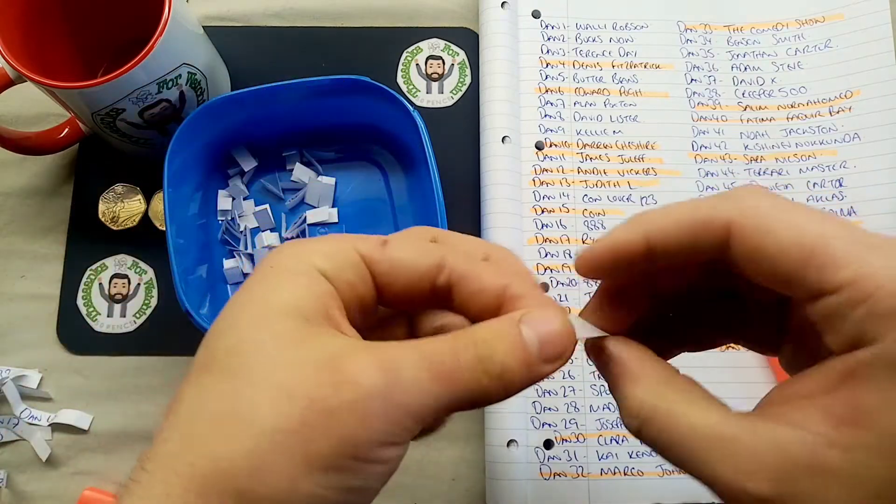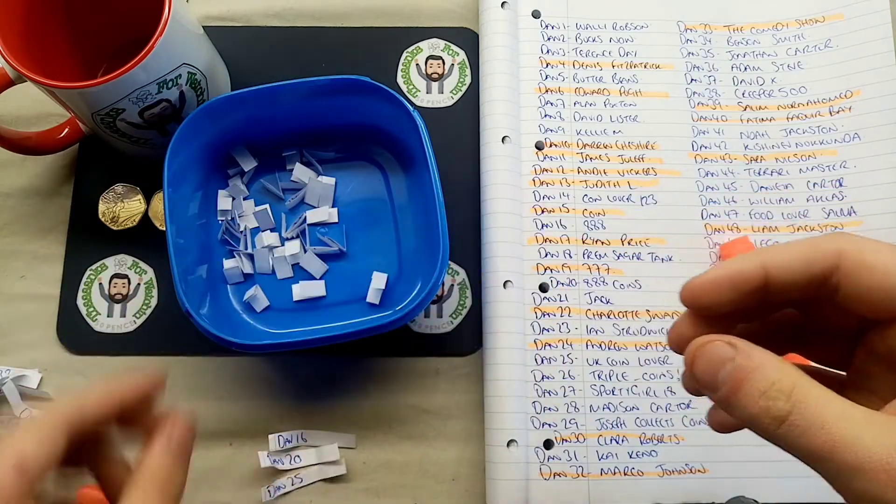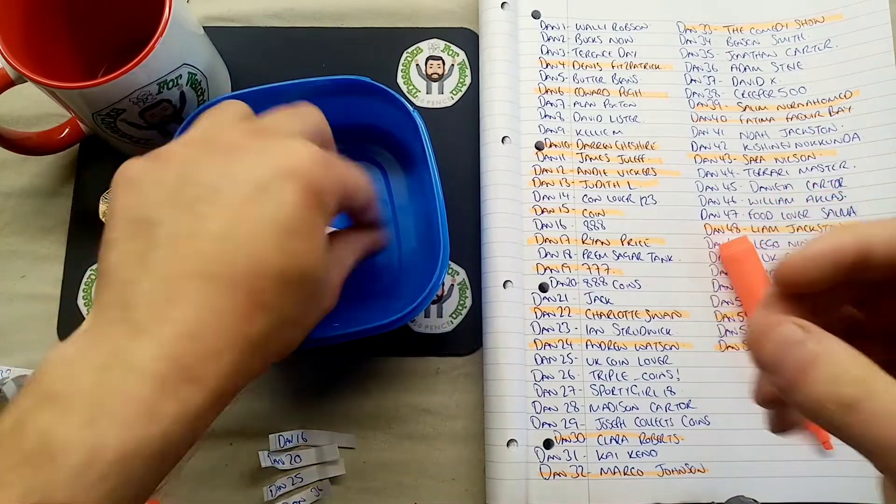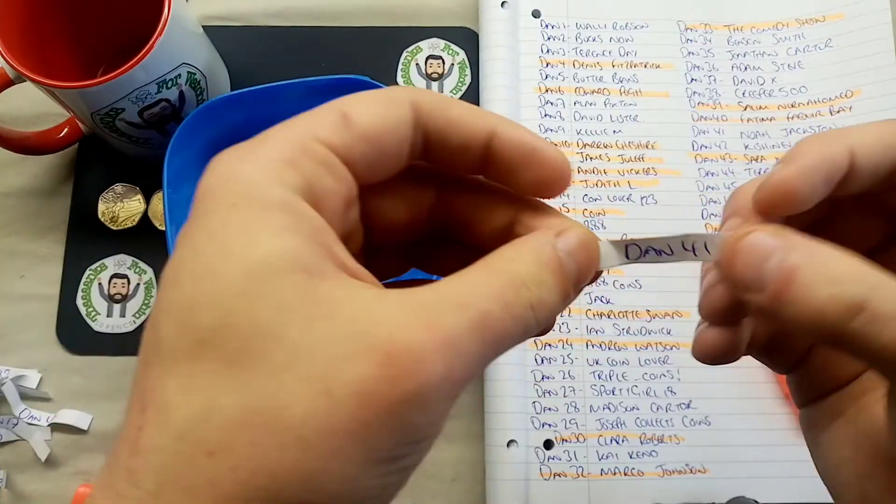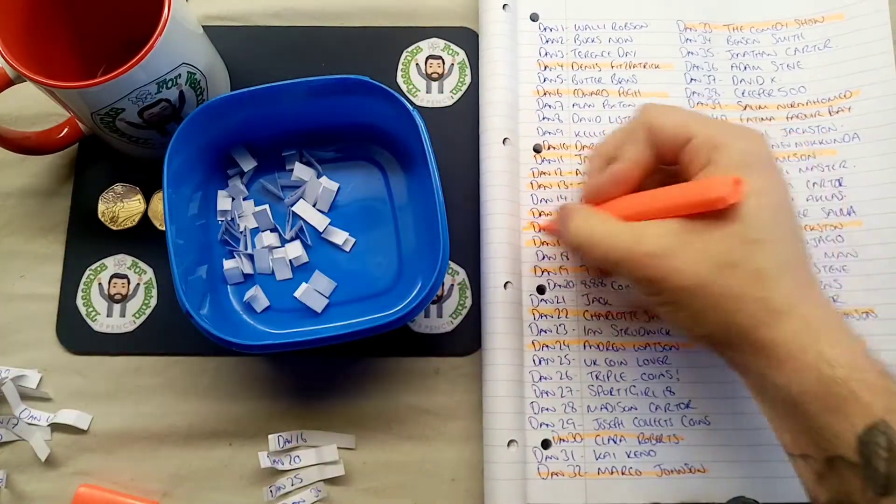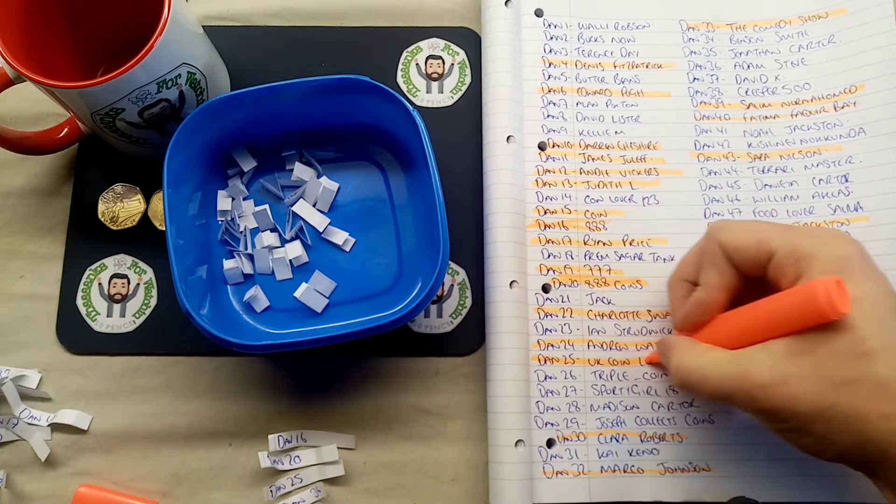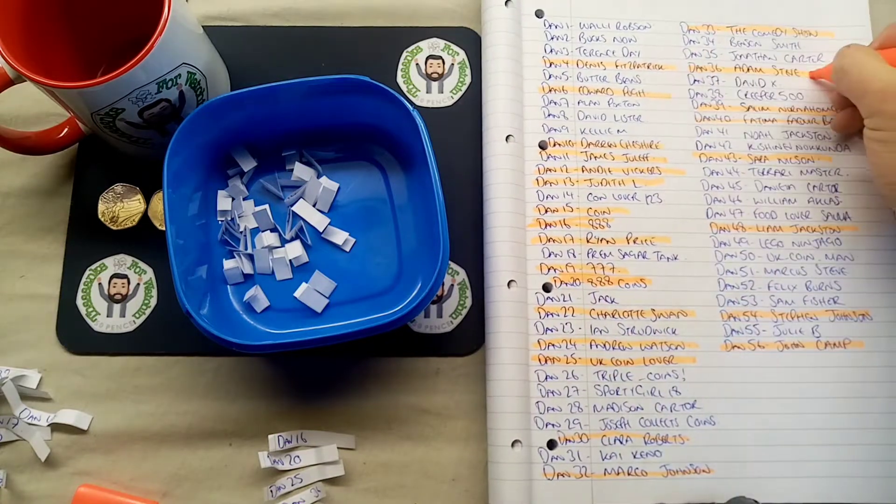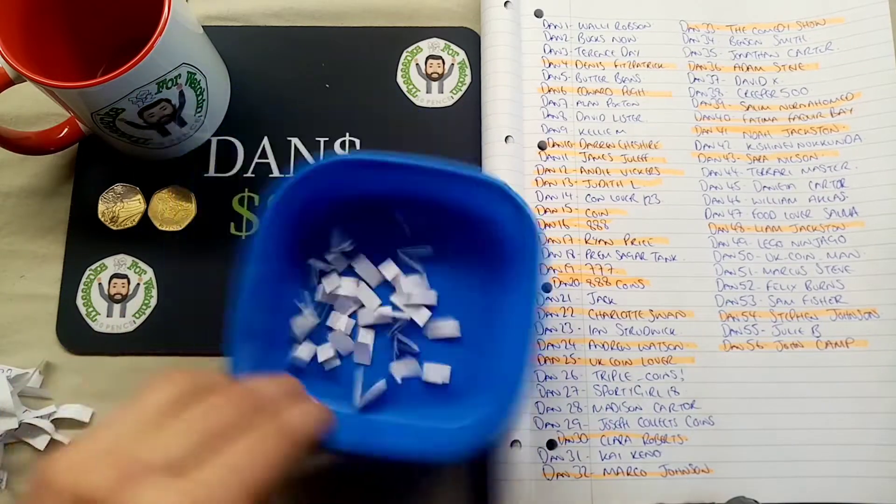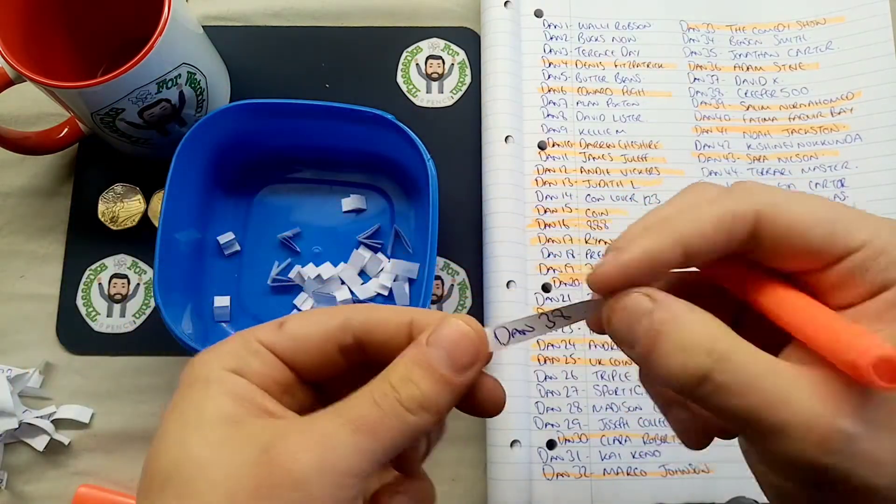On to the next round we go. We've got Dan 20 along with Dan 16. That's followed by Dan number 25. Also Dan 36. And one more in this round then is going to be Dan 41. So out in this round we've got Triple Eight. Also 888 coins. UK coin lover Adam Steve. And also there Noah Jackson.